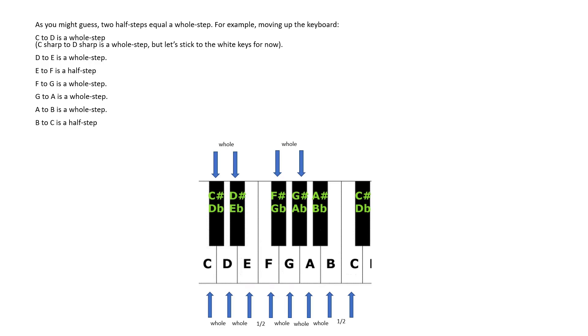As you might guess, two half steps equal a whole step. For example, moving up the keyboard, C to D is a whole step. C sharp to D sharp is a whole step, but let's stick to the white keys for now.